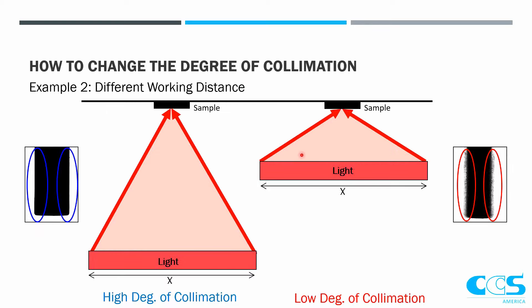Or if we have a situation where we can't adjust the size of the light, but we have room to play with the working distance, we can do that same principle. If the light is very close to the sample, there's a very wide angle that the light can hit. But as we move further and further away, that angle decreases, and we start to get images that look more collimated. Those are two easy ways of creating better images without changing the light you actually have.